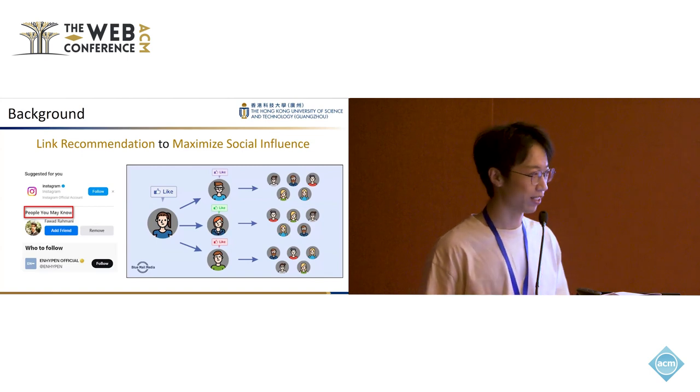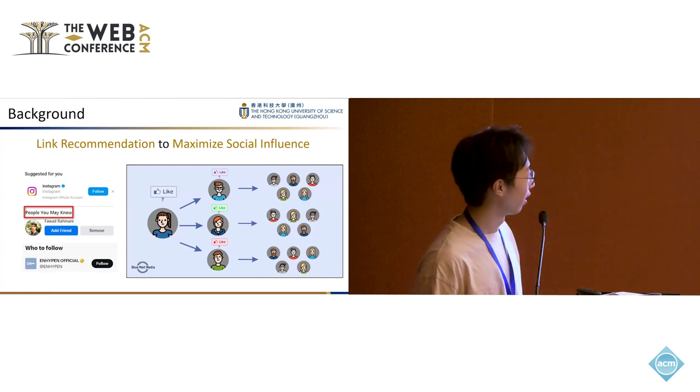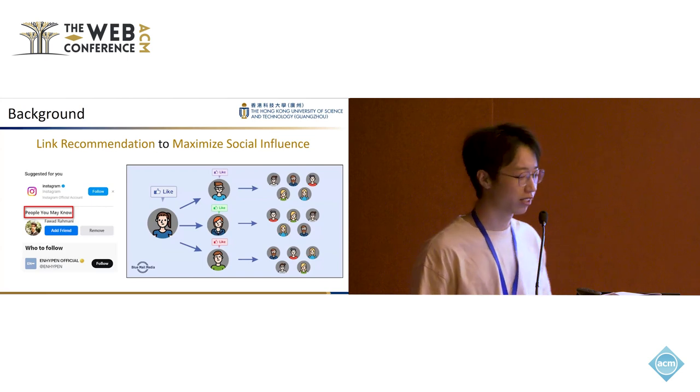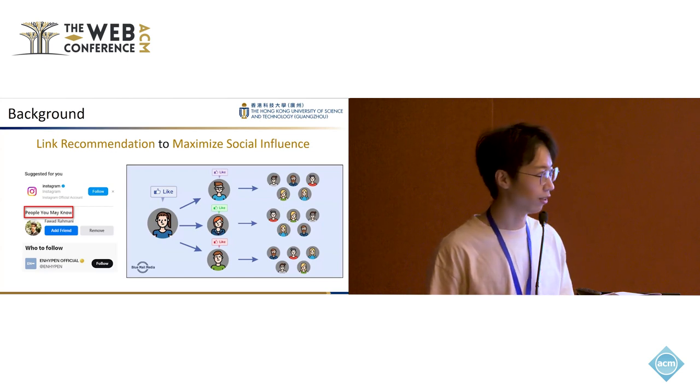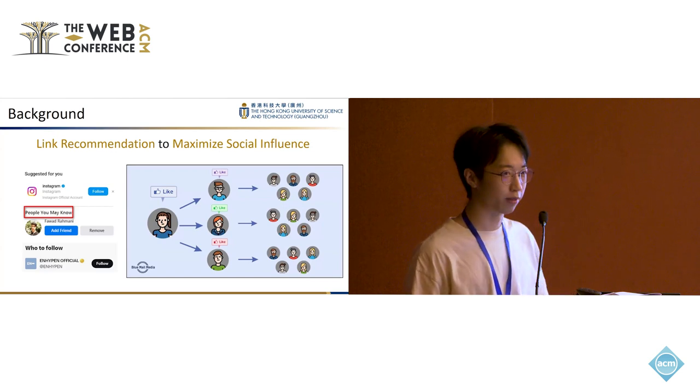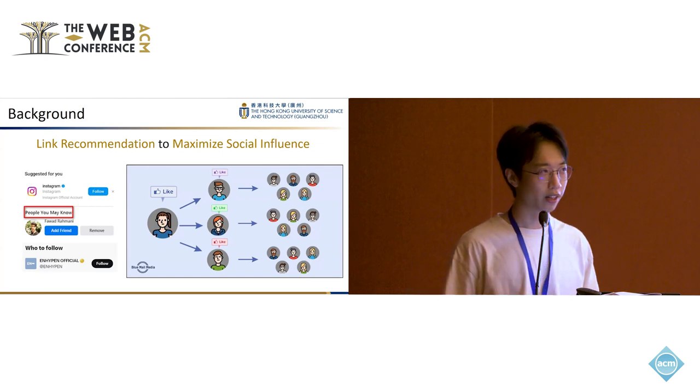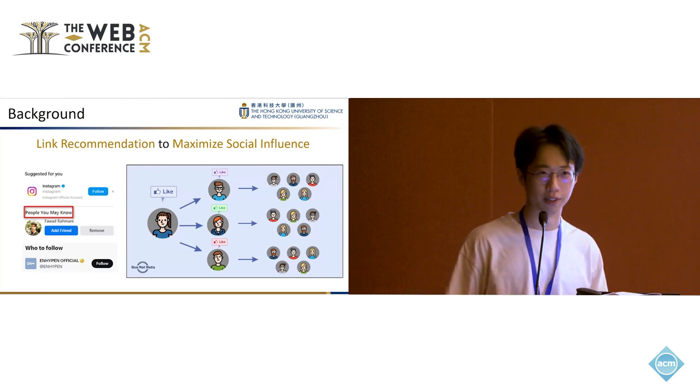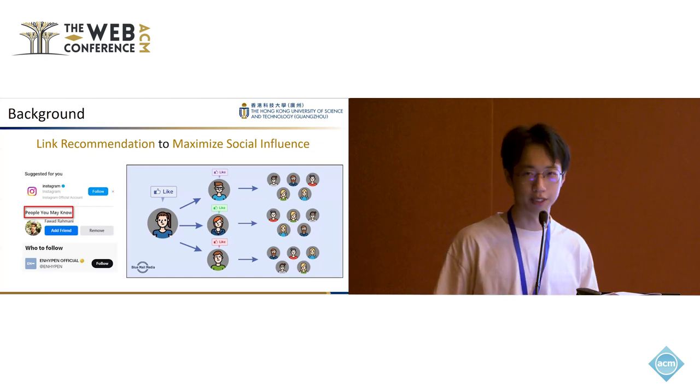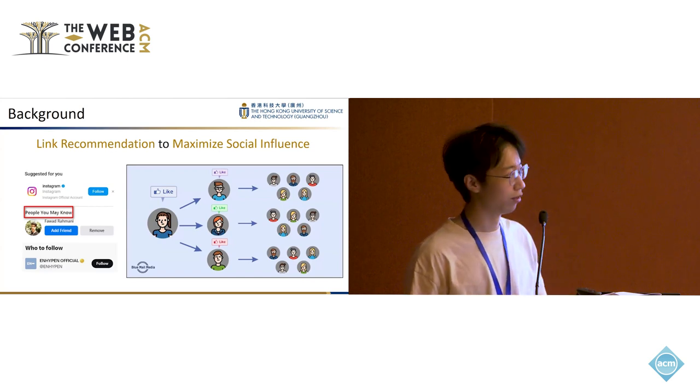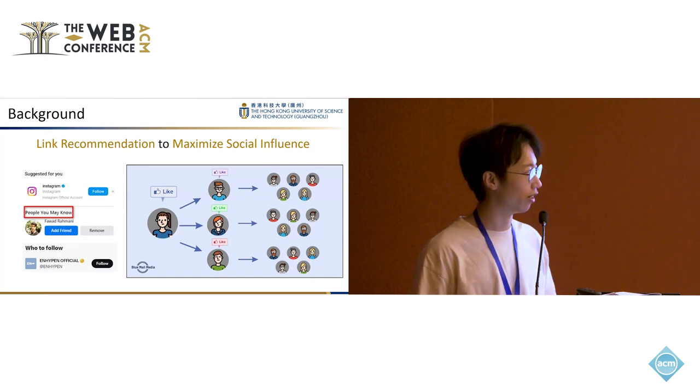Here's the motivation. As we all know, link recommendation systems exist on various online social medias, such as Instagram's suggested for you and Twitter's who to follow. A lot of researchers have used link recommendation systems for various purposes, such as improving centrality or breaking filter bubbles.